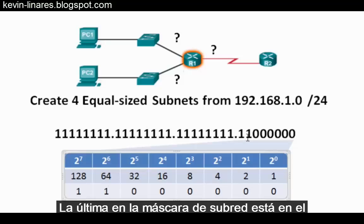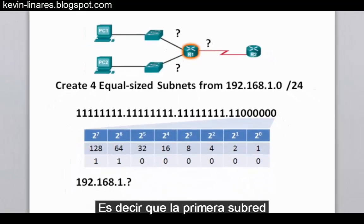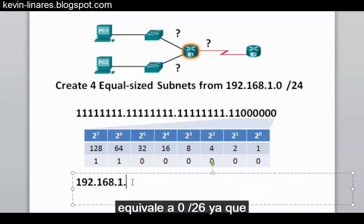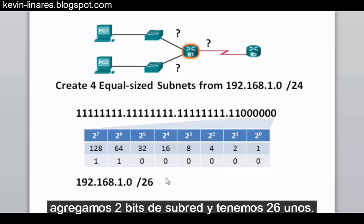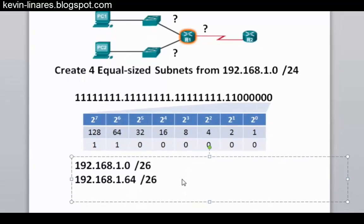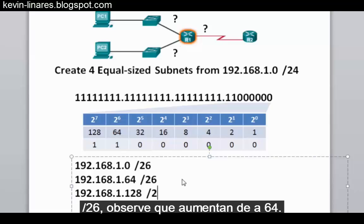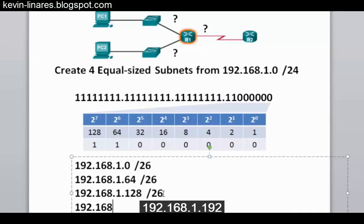The last one in our subnet mask is in the 64s place, so the subnets will go up by 64. The first subnetwork will be 192.168.1.0 slash 26, since we've added two subnet bits and we now have 26 ones. The next subnetwork will be 192.168.1.64 slash 26, then 192.168.1.128 slash 26, and the last one, 192.168.1.192 slash 26.